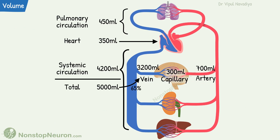You can see the veins contain almost 65% of the total blood in our body. This venous system serves as a volume reservoir. When needed, the blood is mobilized from here — for example, in case of hemorrhage. So this was all about volume.